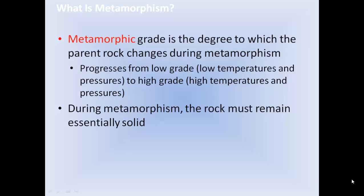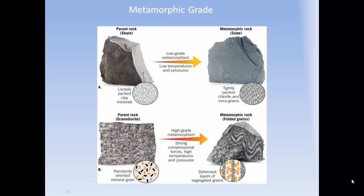Metamorphic grade is the degree to which the parent rock changes during metamorphism. It progresses from low grade — low temperature and pressure — to high grade — high temperatures and pressures. During metamorphism, the rock must remain essentially solid; it never actually thoroughly melts.